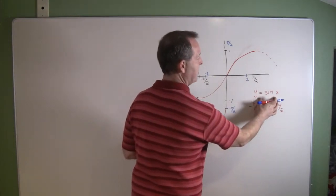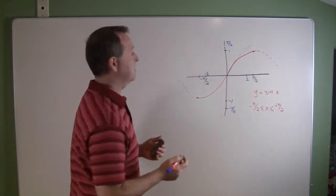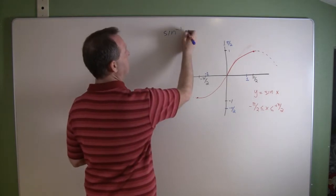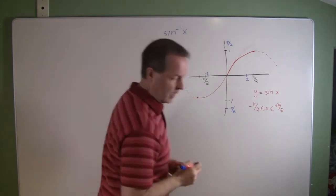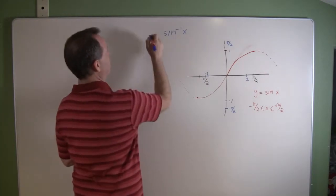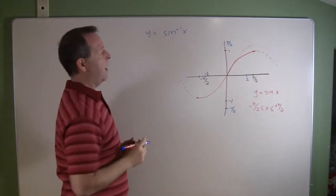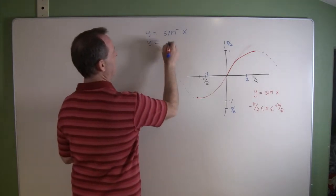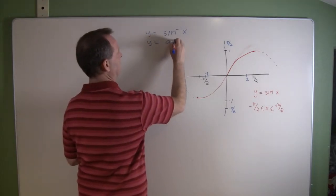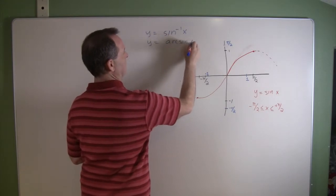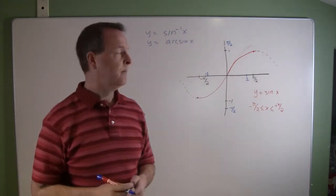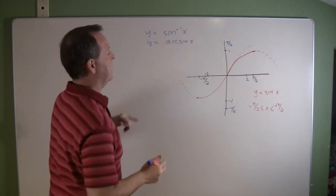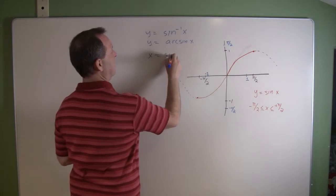Where we traditionally have our y equals sine x, an inverse, and we designate it as such, the inverse of x, and I have y over here. Y equals the inverse of x in that particular fashion. Some people also still use y equals the arcsine, arcsine of x.